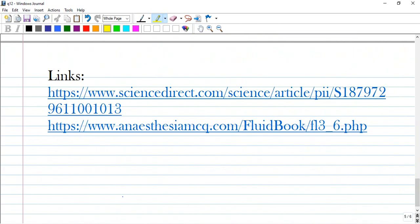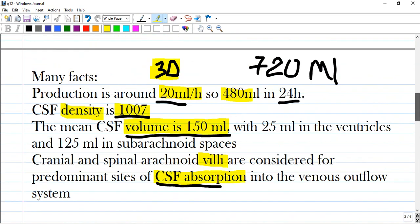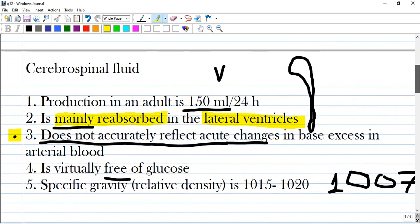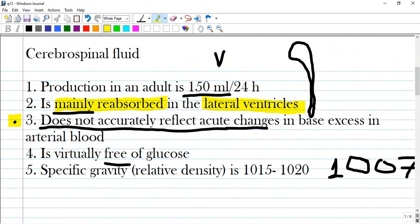We have many links that you can access and study by yourself. Going once again back to the initial question. Production in an adult in 24 hours is around 500 ml per day. Is mainly reabsorbed in the superior sagittal sinus.